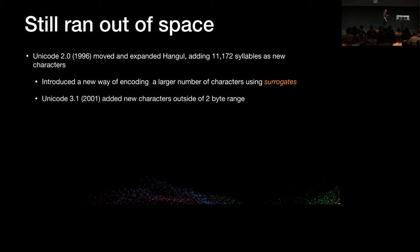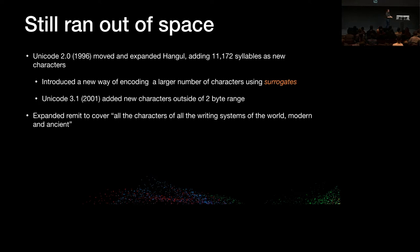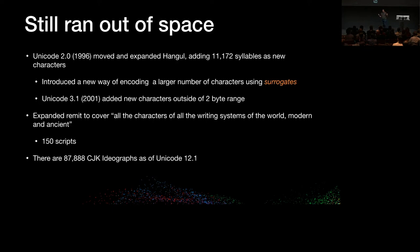Unicode 3.1 in 2001 was the first time characters existed outside the range addressable by the original two-byte UCS2 encoding. Having broken through this glass ceiling of 65,000 characters, the Unicode standards body became more ambitious and decided to expand their remit to cover all characters of all writing systems of the world, modern and ancient. Now there are 150 scripts in Unicode, more than the 20-odd in the first version, and close to 88,000 CJK ideographs — many from ancient Chinese texts — more characters just for CJK than were possible to represent in Unicode 1.0.